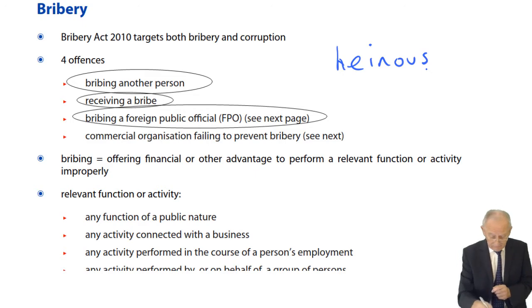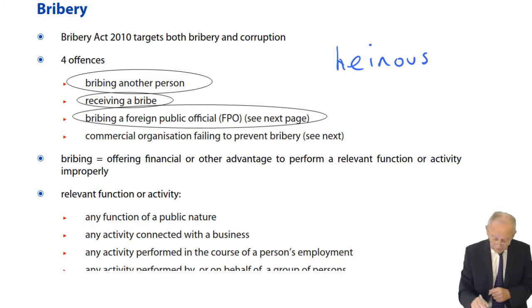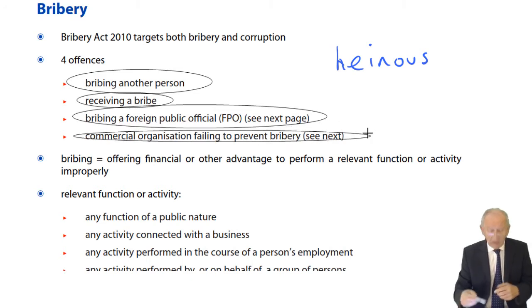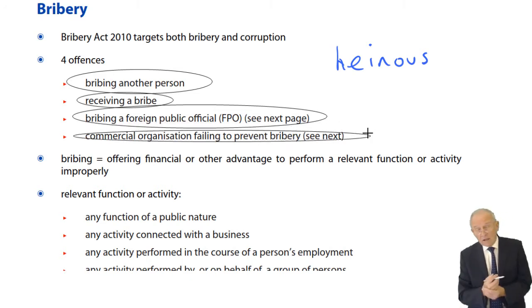The fourth offence is a commercial organisation failing to prevent bribery. I'll look at that in greater detail.